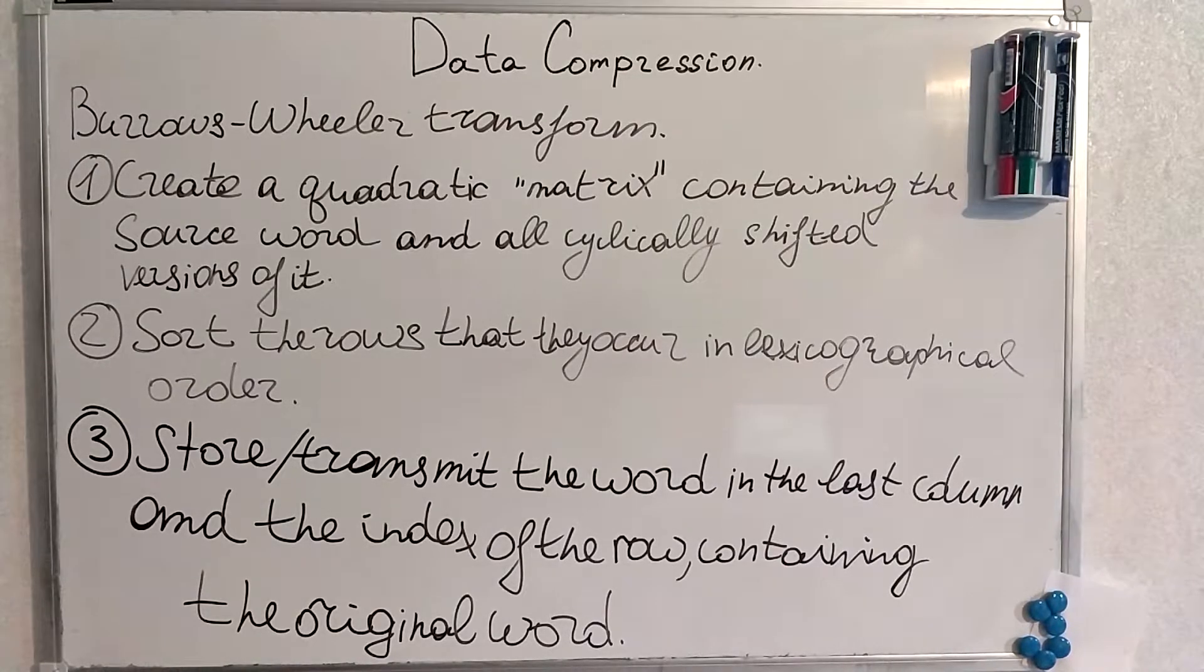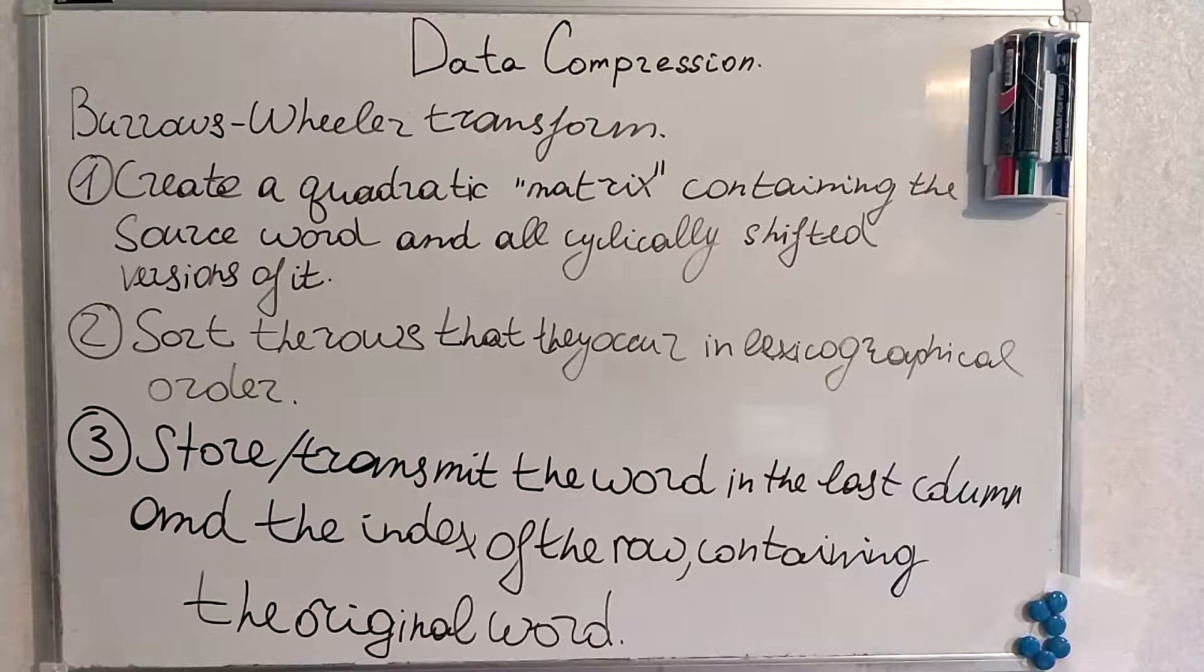We have three main steps. We will iterate through them. We create a quadratic matrix containing the source word and all cyclically shifted versions of the word. Then we sort the rows so they occur in lexicographical order. Then we store or transmit the word in the last column and the index of the row containing the original word. This is the encoding for the Burrows-Wheeler transform.